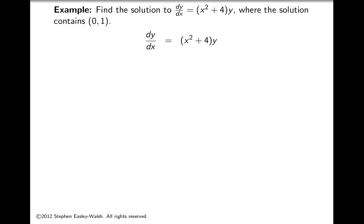So we have: find solution to dy/dx equals (x squared plus 4) all times y, where the solution contains the point (0, 1). Our equation is dy/dx equals (x squared plus 4) times y.